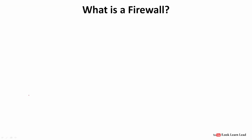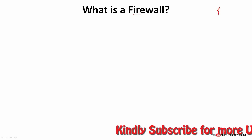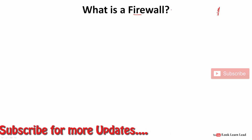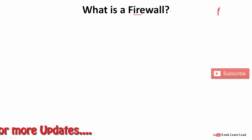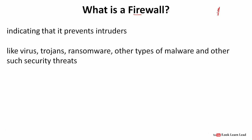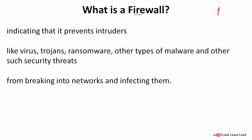What actually is a firewall? Just by the name, we can say it is a wall of fire. Simply, a firewall is like a bouncer or a doorman — it protects our network against security threats such as viruses, trojans, ransomware, and other types of malware and security threats from breaking into networks and affecting them.